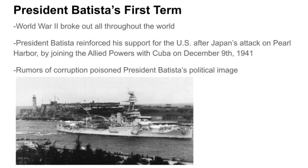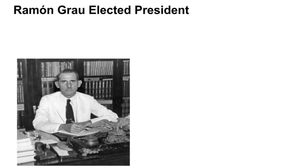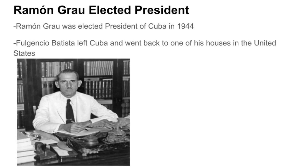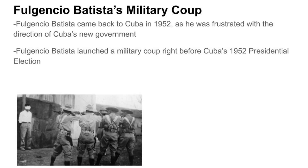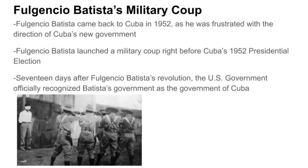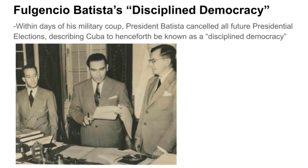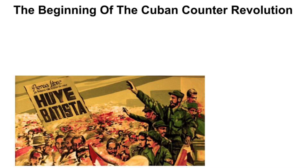Towards the end of Batista's first term, rumors of corruption poisoned his political image, and Ramon Grau was elected president as Batista's term ended. Shortly after Grau's inauguration, Batista left Cuba for one of his houses in the United States. Frustrated with the direction of Cuba's new government, Batista returned in 1952 and launched a military coup right before Cuba's 1952 presidential election. Just 17 days later, the U.S. government officially recognized Batista's government. Within days, Batista canceled all future presidential elections, describing Cuba as henceforth a disciplined democracy.